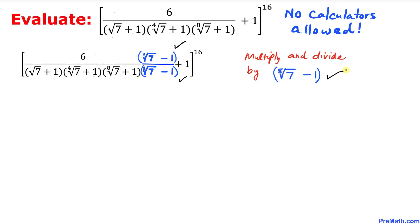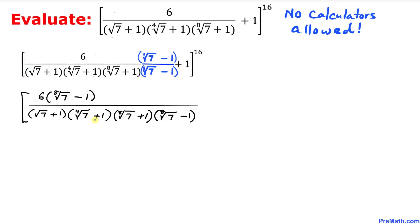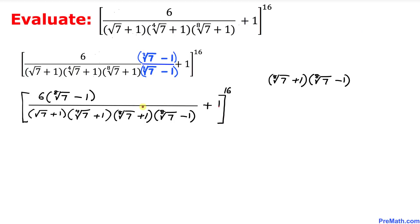We can write our given problem as: on the numerator it is going to become 6 times the eighth root of 7 minus 1 on top, divided by all these radicals in the denominator, and then plus 1, and then everything to the power of 16.